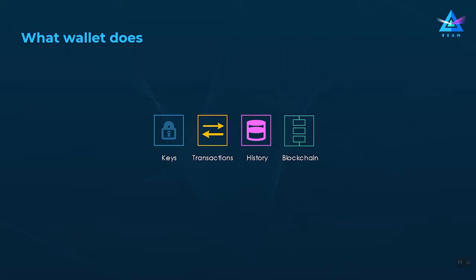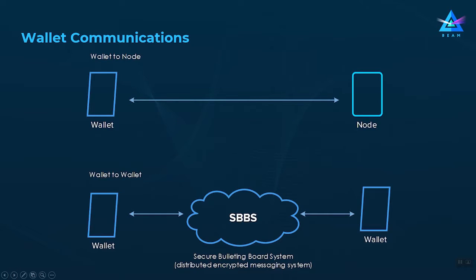This is why the wallet has to manage the state of the communication and send information to one another to create transactions interactively. The wallet also holds all the history of transactions and UTXOs locally in the local database, and it has to know the current state of the blockchain — the current blockchain height, which UTXOs were spent, and which transactions were mined.